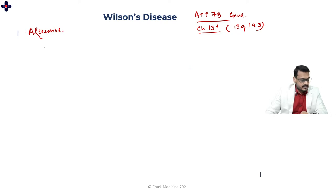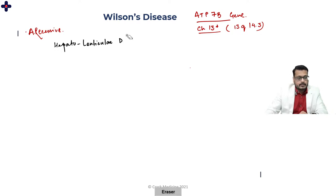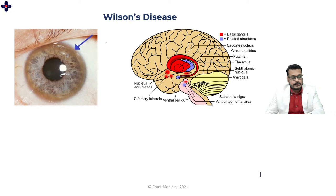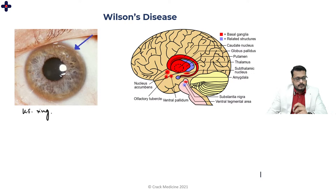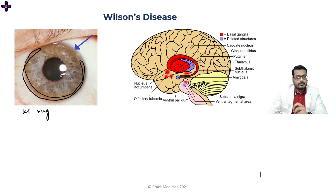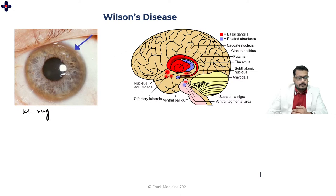Wilson's disease is also called hepatolenticular degeneration because of copper deposition in hepatocytes (liver) and in the lenticular nucleus. One of the most important and cardinal diagnostic features, when present, is the Kayser-Fleischer (KF) ring — copper deposition in Descemet's membrane of the cornea. This appears as a greenish-gold ring around the cornea. However, if a KF ring is not seen on slit-lamp examination, Wilson's disease cannot be ruled out.